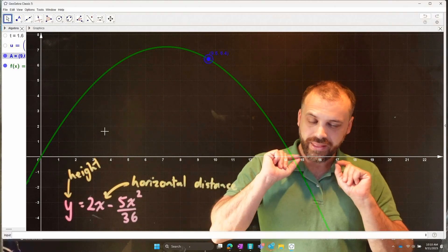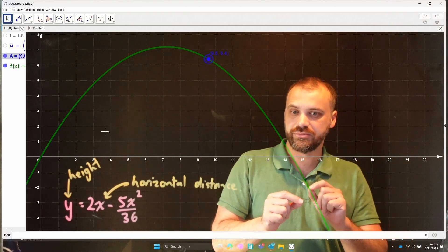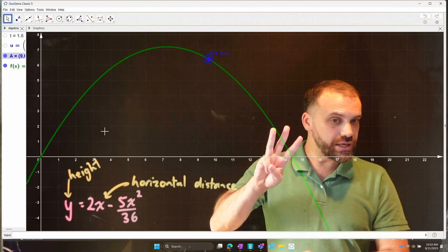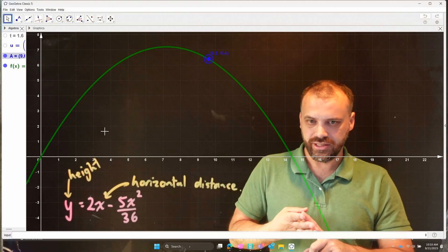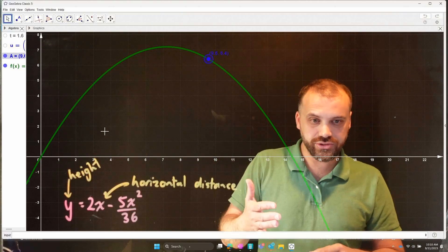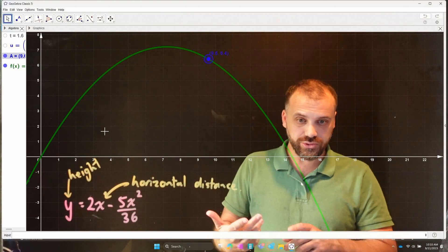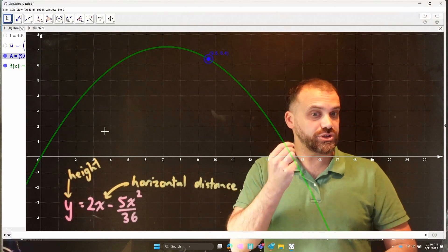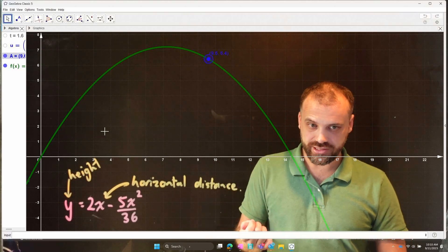We just wouldn't be able to figure that out. Now, a vector function is going to be able to tell us all three things simultaneously. It's going to be able to tell us its horizontal distance, its height, and also the time at which it is at each of those places.